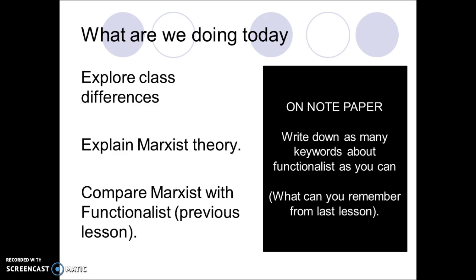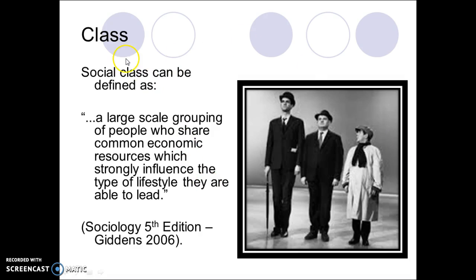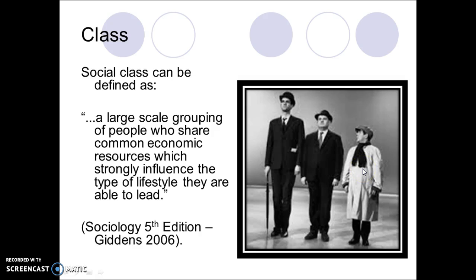So what is social class? Your social class can be defined as a large-scale social grouping of people who share common economic resources, which strongly influence the type of lifestyle that they lead. Economic resources means wealth or money, and that wealth and money will influence the type of lifestyle they're going to live. In your booklet you'll see a picture — this side being the upper class and this side being the working class.